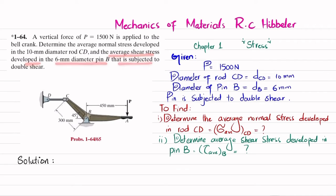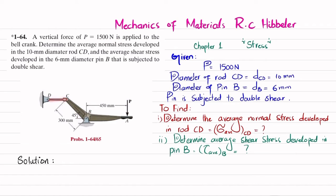This is the bell crank which has a load of 1500 N applied to it. This is the rod CD which is used to support the bell crank, and there is a pin support at point B. This pin has a diameter of 6 mm while rod CD has a diameter of 10 mm. We need to find the average normal stress in rod CD and the shear stress in pin B.